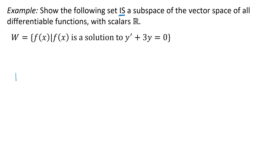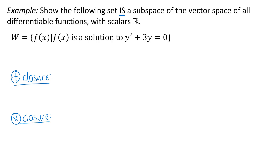So I have the additive closure property that I need to show, and also the scalar multiplication closure property that I need to show. That's going to be the structure of my proof — it's a matter of filling in what exactly that looks like and how exactly I show those two things.